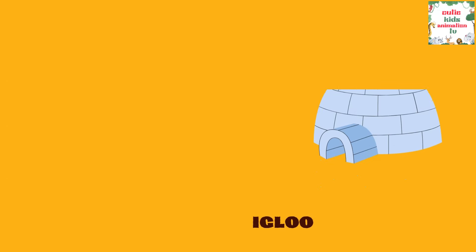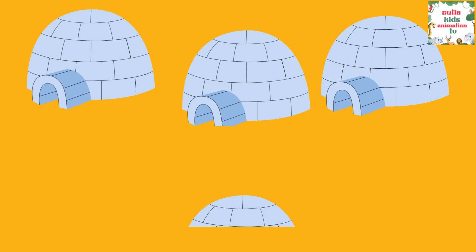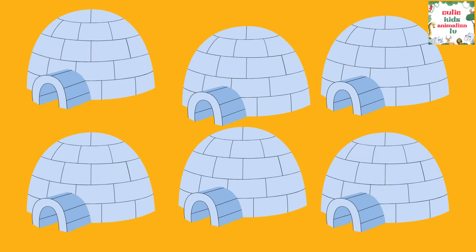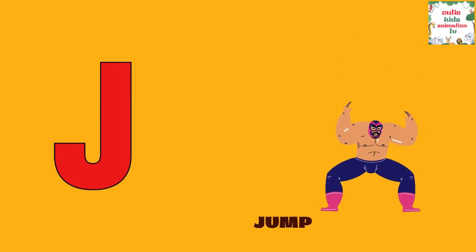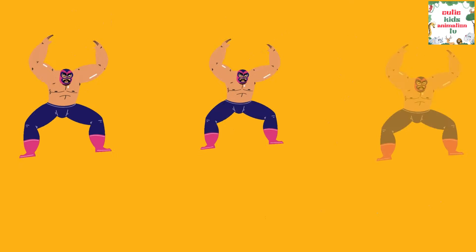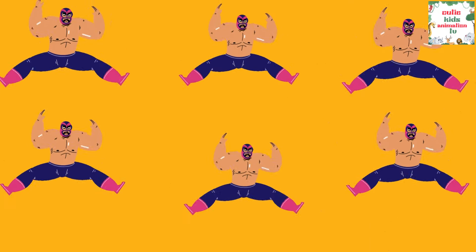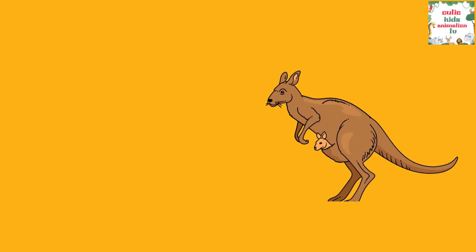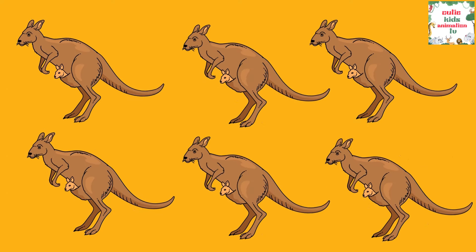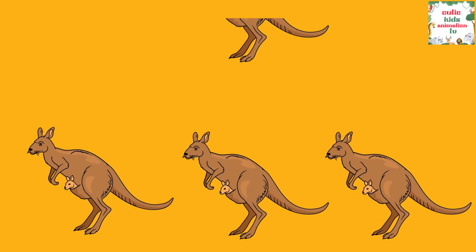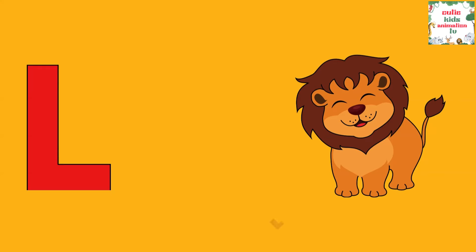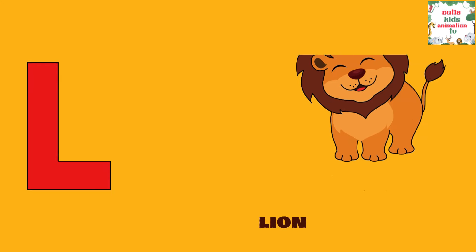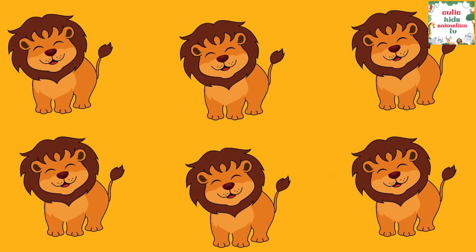I is for Igloo, I-I-Igloo. J is for Jump, J-J-Jump. K is for Kangaroo, K-K-Kangaroo. L is for Lion, L-L-Lion.